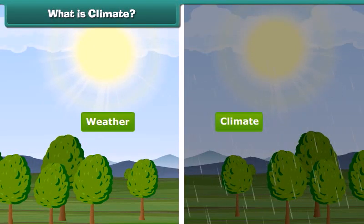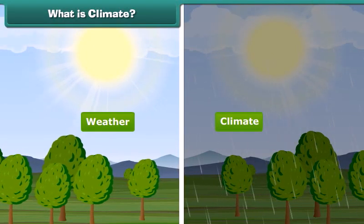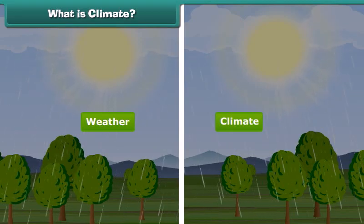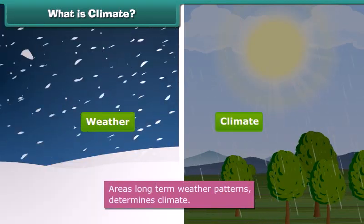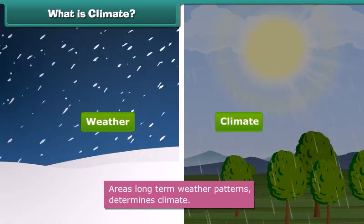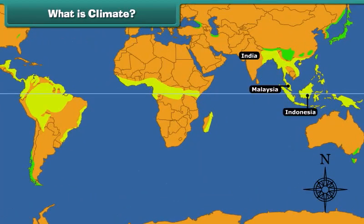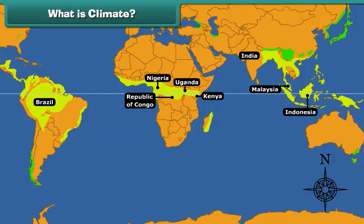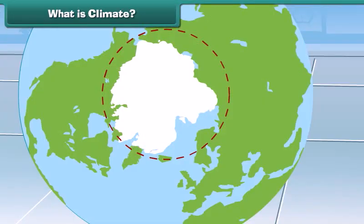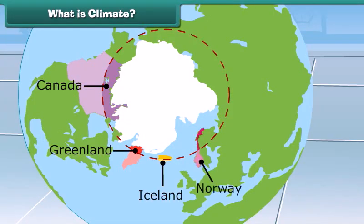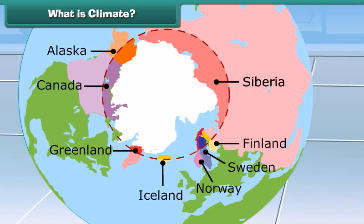Is weather and climate the same? No. Areas' long-term weather patterns determine climate. For example, areas near the equator have warm climate and the areas near the poles have much colder climate. So, children, now you can easily differentiate weather from climate.